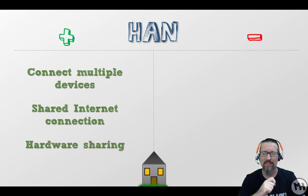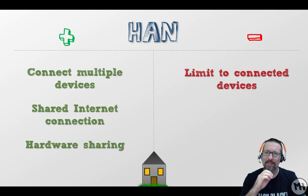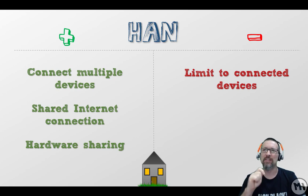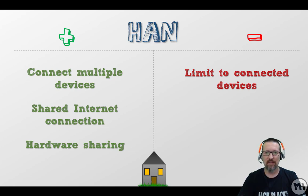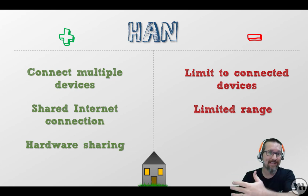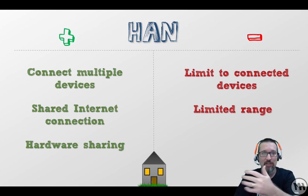However, there are some cons — disadvantages to having a Home Area Network. There is a limit to how many devices you can have connected. Our router — it's a D-Link router — takes up to 16 devices, that's the limit. So it can handle up to 16 devices and no more; that is a disadvantage.